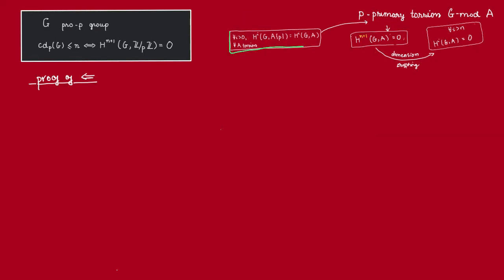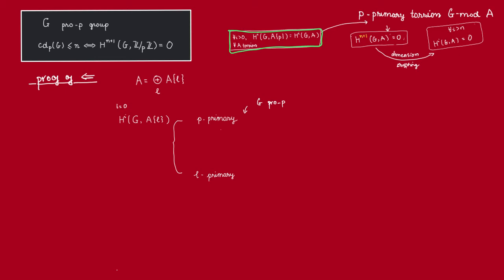So let us first prove this. Let's decompose A into its l-primary components, and then look at the cohomology group with coefficient in A_l. Observe first that these are going to be p-primary — why is that? Because G is a pro-p group, so this is just from our earlier remark: cohomology groups in degree greater than 0 of a pro-p group are always p-primary.